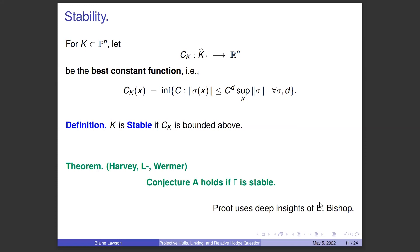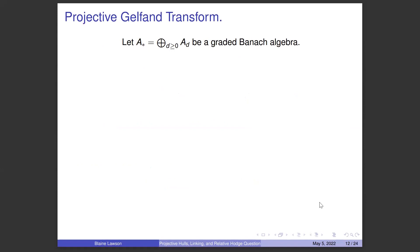Reese Harvey, John Wormer, and I were able to show that Conjecture A holds if gamma is stable. This uses deep insights of Herb Bishop from way back.